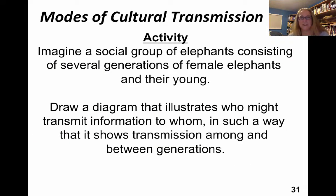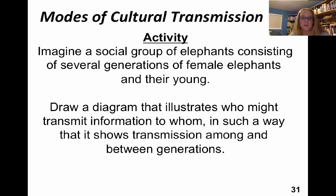So let's think about modes of cultural transmission. Imagine a social group of elephants — several generations of female elephants and their young. Let's call it three generations: grandmother, mother, and the youngest generation of elephants. You could draw arrows pointing at who might be sharing information with whom — how would information be transmitted between the generations?